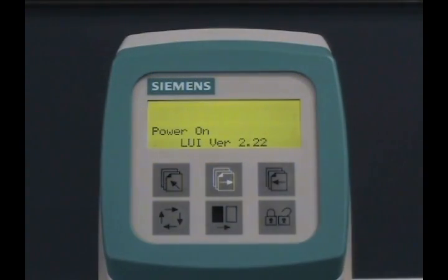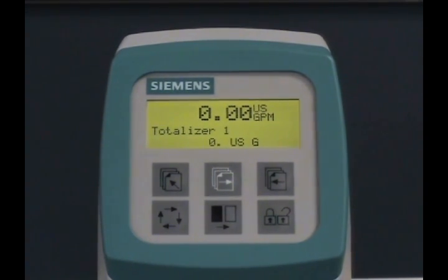Mains power can now be applied to the transmitter. Note that the transmitter will initialize for a few seconds. After that, the operator screen will be shown, and the meter is now ready to accurately measure the flow through the pipe.